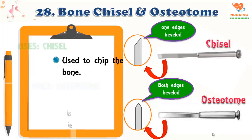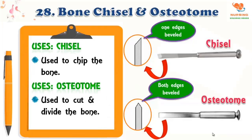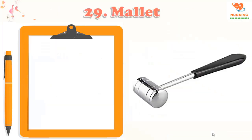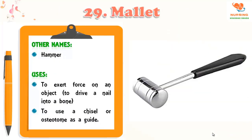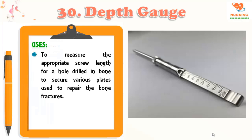Some additional instruments: bone chisel and osteotome. The chisel is used to chip the bone, and the osteotome is used to cut and divide the bones. On the picture you can see the difference — one beveled edge is called a chisel, and both edges beveled is called an osteotome. The mallet, otherwise called a hammer, is used to exert force on a particular object, to drive nails into the bone, or to use with a chisel or osteotome as a guide.